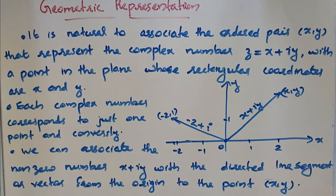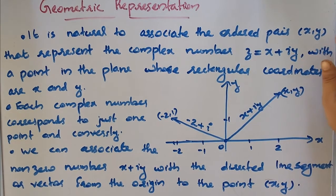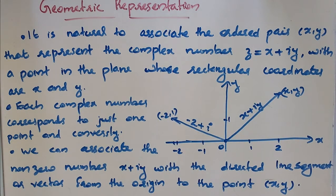Today we will discuss the geometric representation of complex numbers. It is natural to associate the ordered pair (x, y) that represents the complex number z = x + iy with a point in the plane whose rectangular coordinates are x and y.